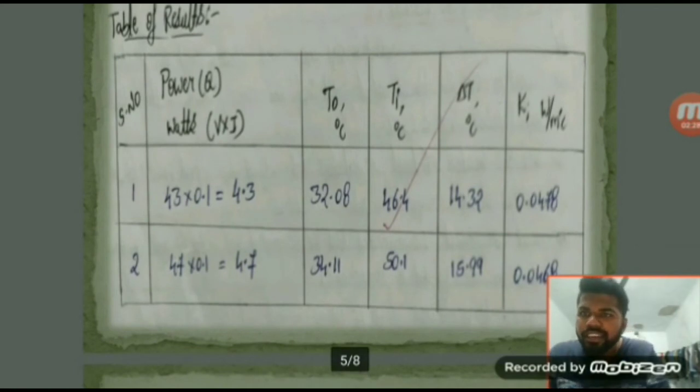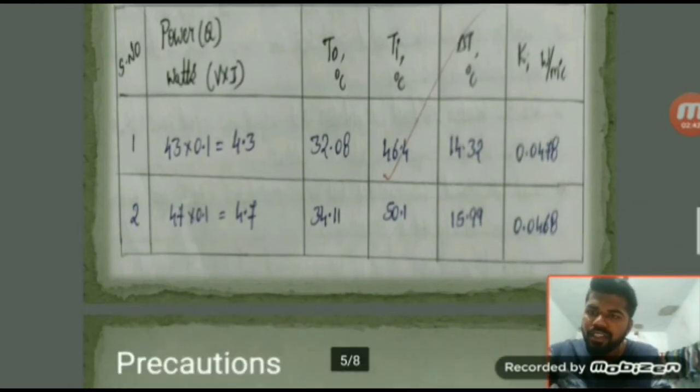The table of results is given. We have to initially write the power input, then the temperature outlet, outside temperature, inside temperature, the change in temperature, and the coefficient of thermal conductivity of the insulating material.